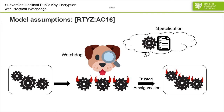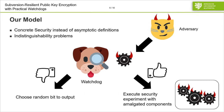So how does our model look? We use concrete security instead of asymptotic definitions. Also, the runtime of the Watchdog is a dedicated parameter. The adversary provides implementations of the individual building blocks, which the Watchdog then tests against the specification. If the Watchdog detects some behavior that does not conform to the specification, it chooses a random bit to output. Since we consider indistinguishability problems, this means the adversary loses and has advantage zero. Otherwise, if the Watchdog approves the implementation, we execute the security experiment with the amalgamated components and output whatever the security game outputs.